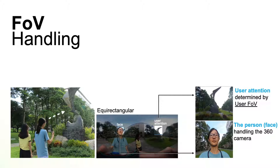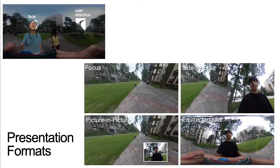This way, we can extract two important sub-images in the equirectangular image, which are the user attention and the user face. Now we have the face image, the user attention image, as well as the equirectangular image. And we can use this material to provide four different presentation formats, which are the focus, side by side, picture in picture, and equirectangular.